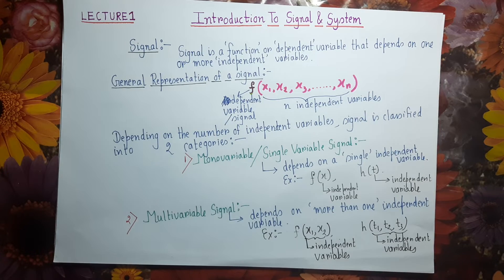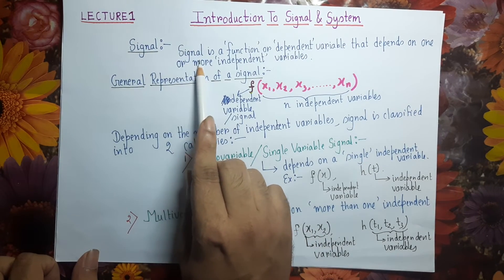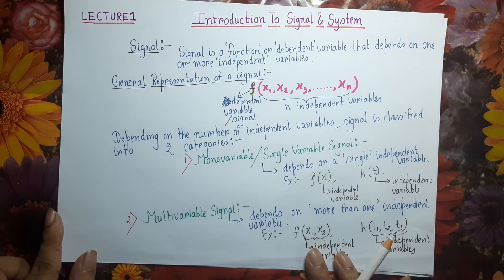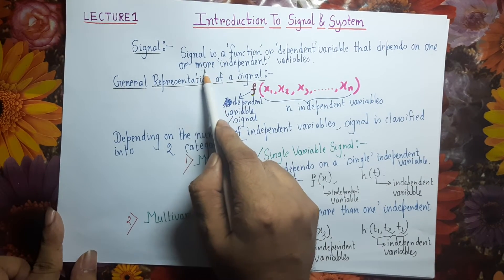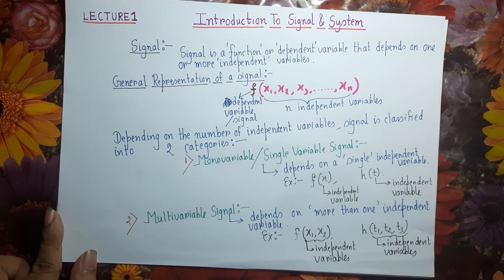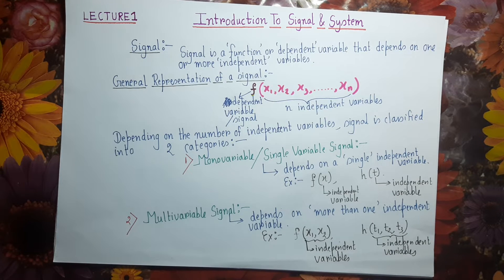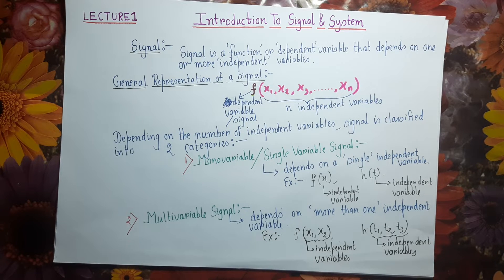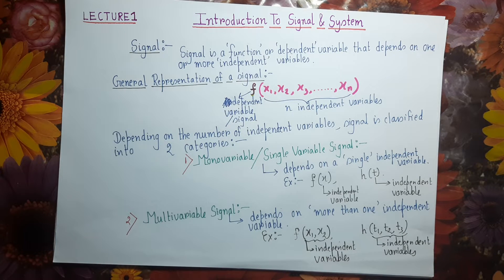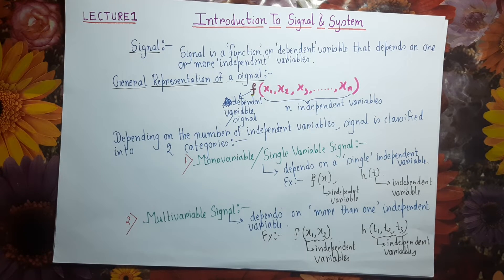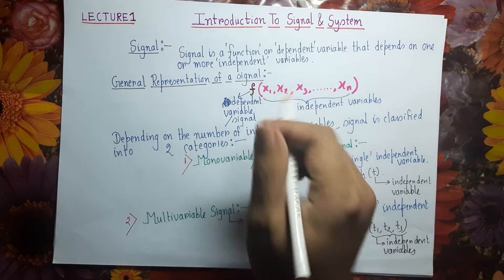Let us start with a formal definition of a signal. A signal is a function or a dependent variable that depends on one or more independent variables. Any physical quantity that varies is a variable. Independent variables are those that can be tuned or changed according to the need of the user, while dependent variables are those whose value depends on the independent variable. The convention is to use X for the independent variable and Y for the dependent variable.